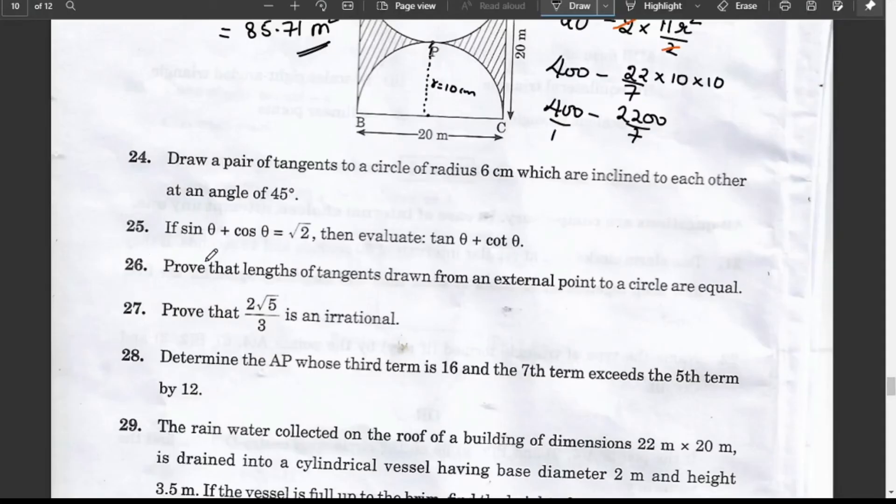Question 28: Prove that lengths of tangents drawn from an external point to a circle are equal. This is your theorem. Do refer the theorem by RHS. Very easy theorem. PA, PB, 90 degrees each. By RHS criteria you prove these two triangles are congruent, and PA equals PB by CPCT.